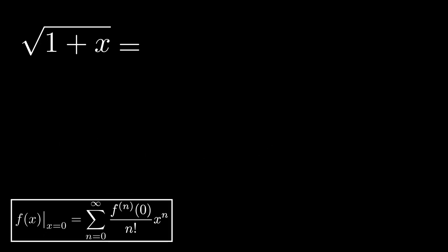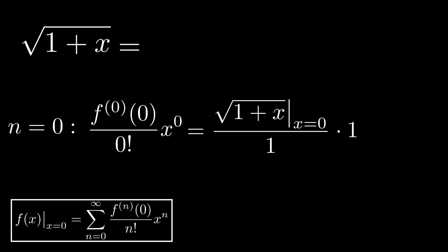The series starts at n is equal to 0, and thus this will be the first term in our expansion. We simply take the general form and plug in n is equal to 0. In the numerator, we have f with superscript 0. Now this is the 0th derivative, which is simply the function itself. Then we still need to fill in x is equal to 0 in this function. In the denominator, we have 0 factorial, which is 1. And we shouldn't forget to multiply this fraction with x to the power of 0, which is also simply 1.